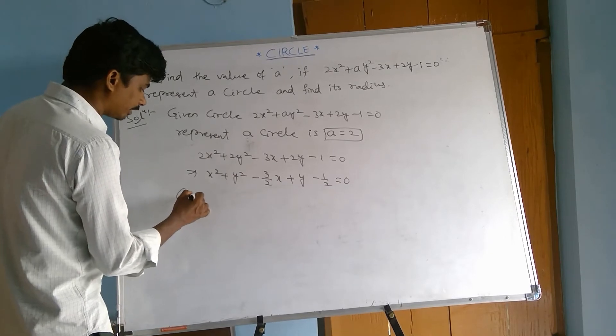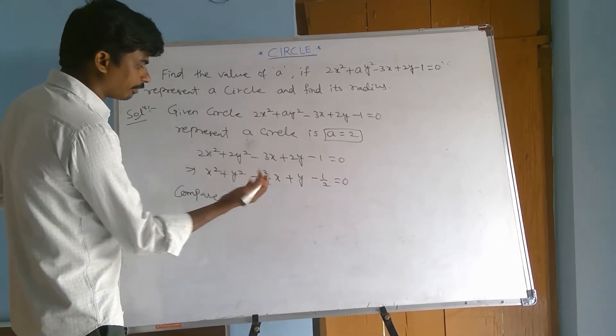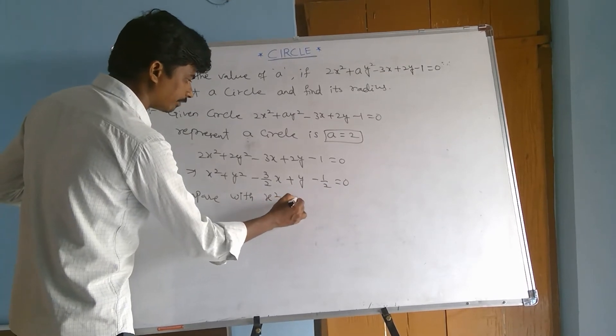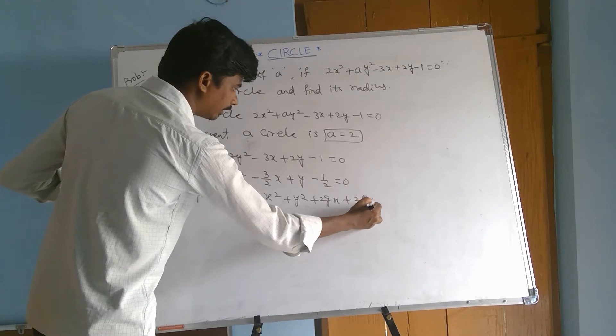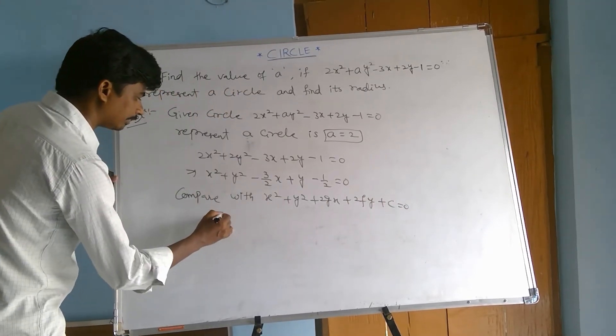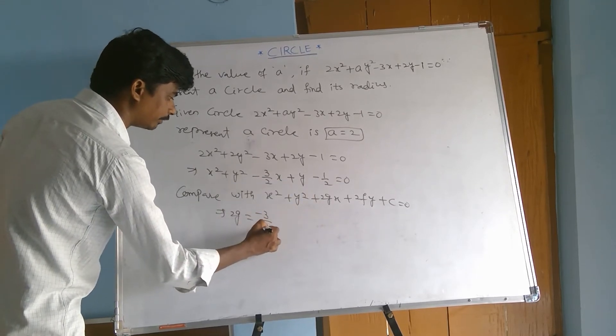Now compare with the general form of a circle, which is x square plus y square plus 2gx plus 2fy plus c equal to 0. That implies 2g equal to minus 3 by 2.